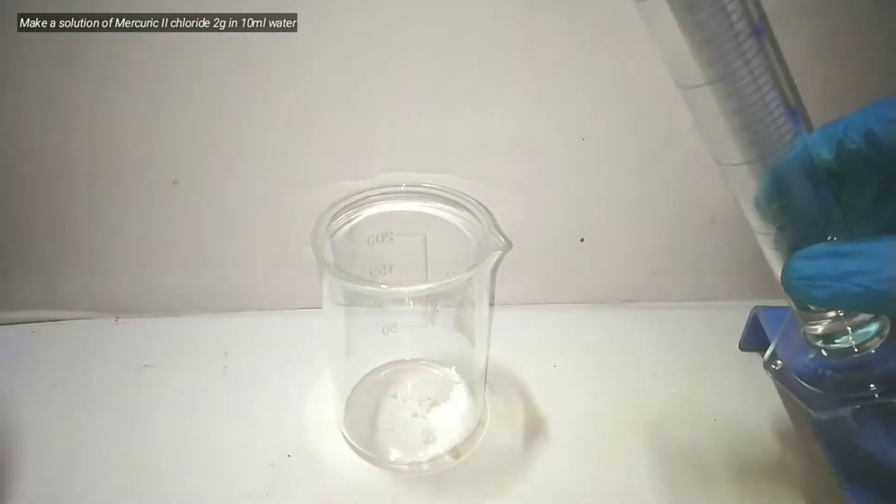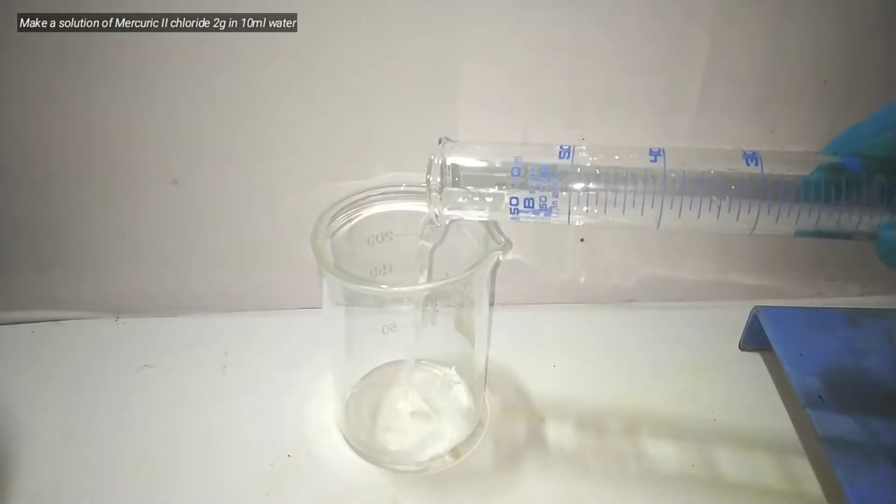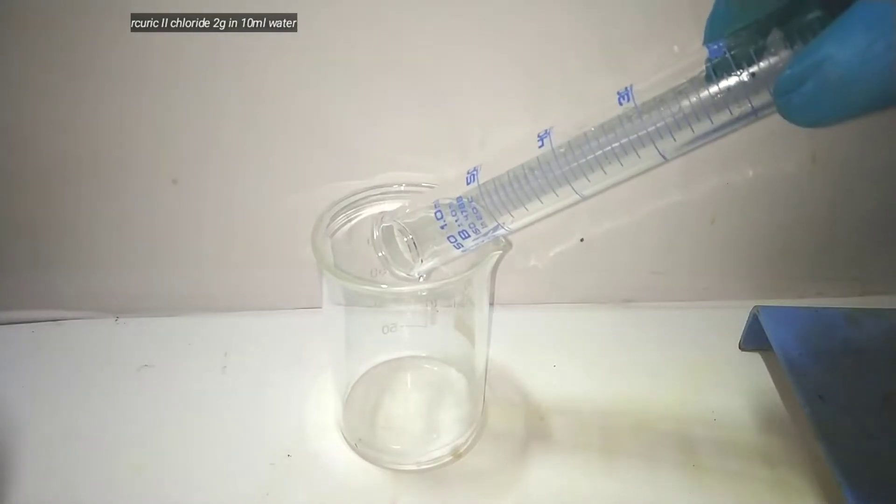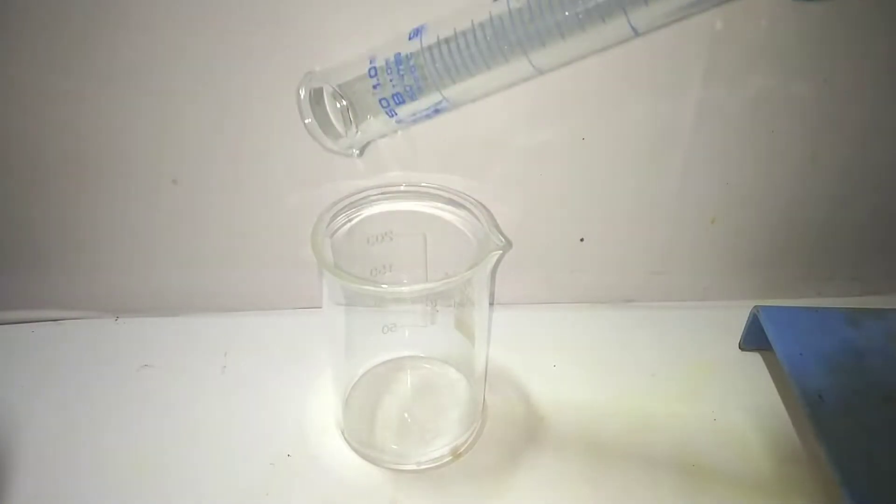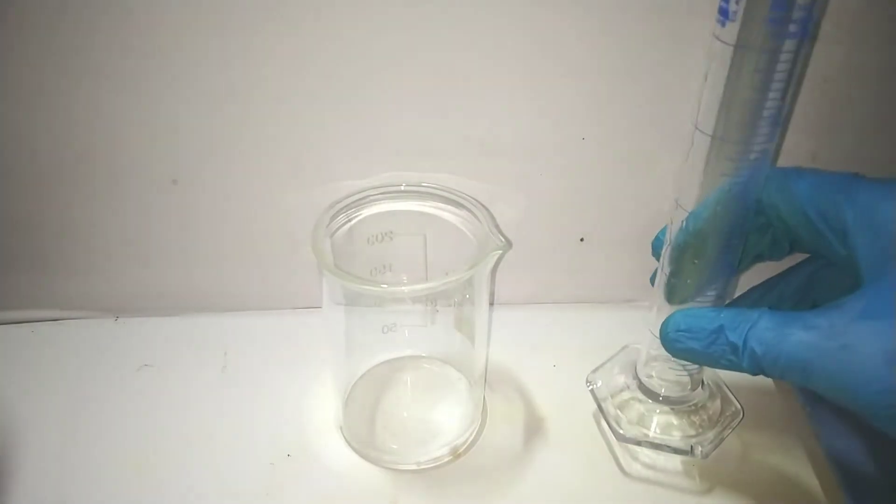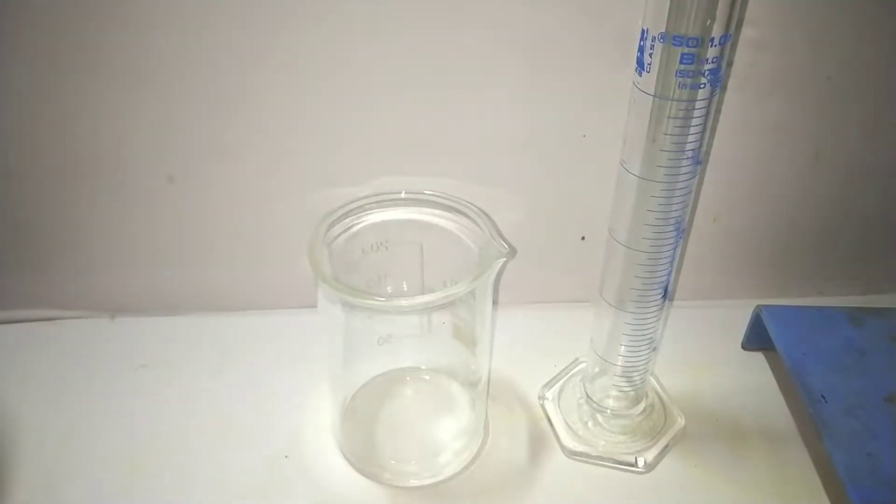Meanwhile we prepare a solution of mercury(II) chloride by dissolving 2 g of mercury(II) chloride in 10 ml of distilled water. Be very careful while handling soluble mercury salt.